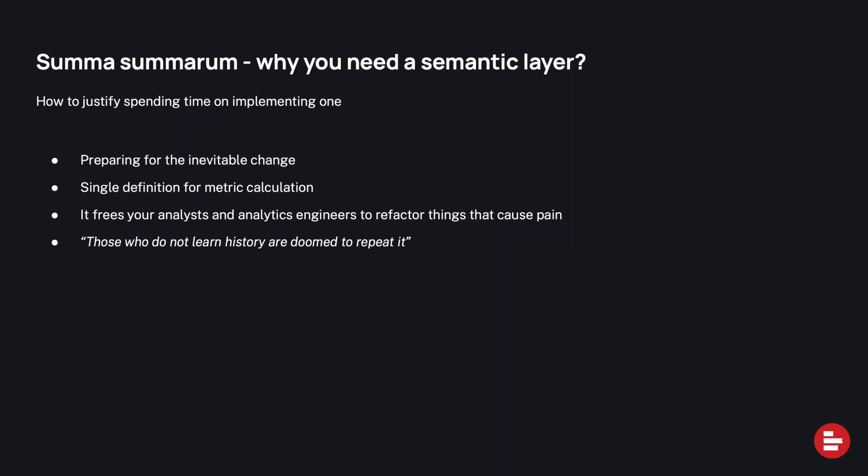A little summary of what we've just gone through. The first point in justifying a semantic layer is preparing for inevitable change. You probably can't always know what will change, when, or how significant it will be. But if you have good tooling, it allows you to make those changes with as little effort as possible. A semantic layer is one of those things — it will help you in those cases when, inevitably, something changes.